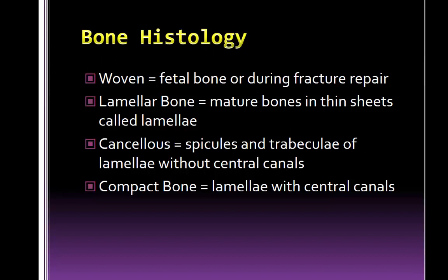The first type of bone we're going to talk about is a special type called woven bone. Woven bone is present in fetal development. We also see woven bone created during fracture repair. This is a rudimentary form of bone that allows for hydroxyapatite and collagen to be created in the bony matrix. However, it is not as structurally sound as lamellar bone.